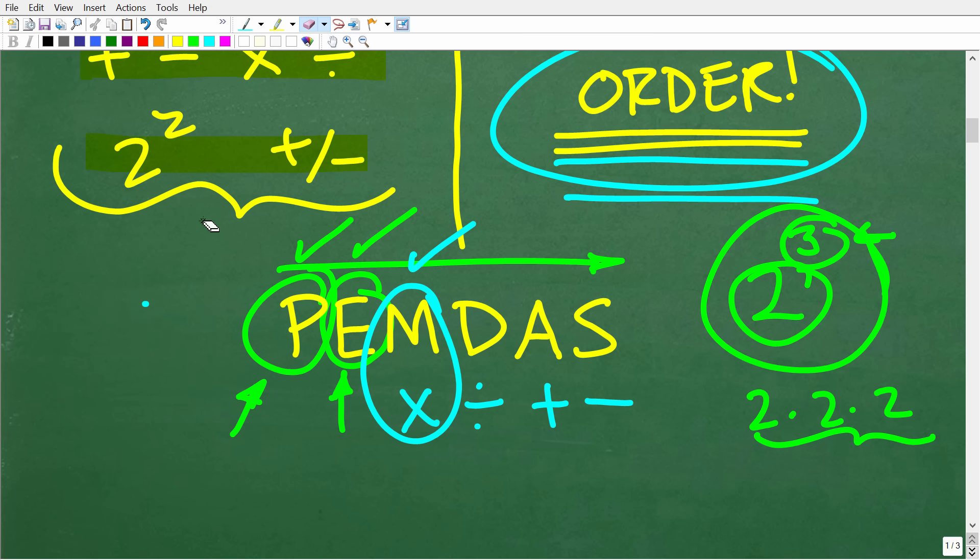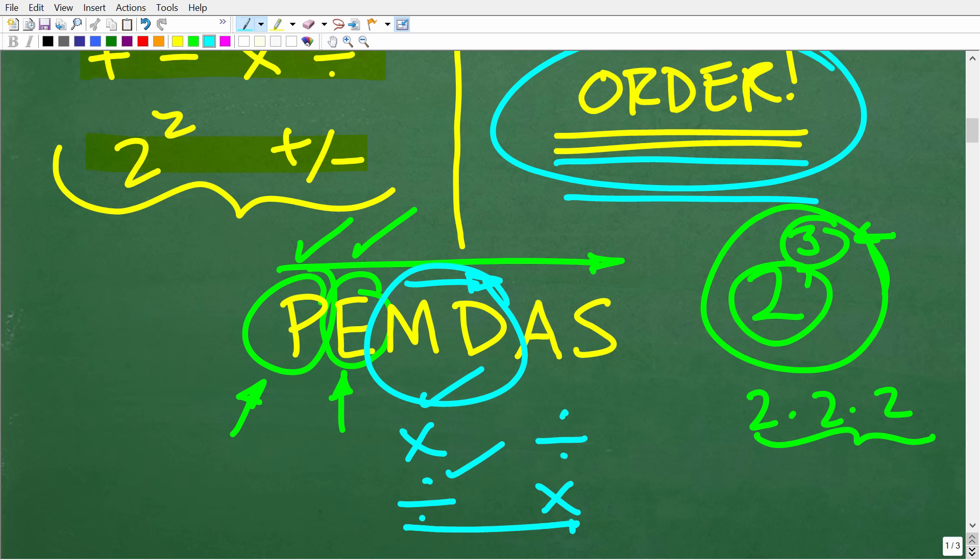So we have to be very careful with this PEMDAS checklist. The way this actually works is we're going to do any multiplication or division, whatever we see first from left to right. And addition and subtraction work the same way.